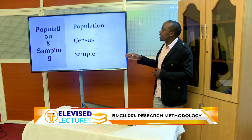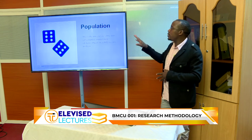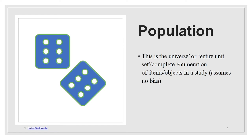In simple terms, population is the entire unit of items — people, animals, entities, organizations, or objects. Population is the universe or the complete enumeration of items in a study. We always assume there is no biasness. Even when governments carry out a census, like the 10-year census done in Kenya, it is practically impossible for the government to capture everybody, and that is why they apply certain tools and methods of analysis.